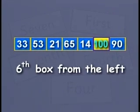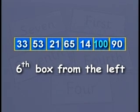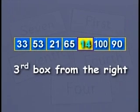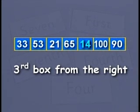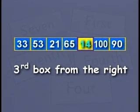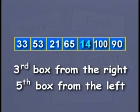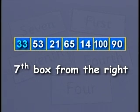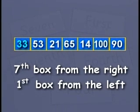From your left, 100 is in the sixth box. From your right, 100 is in box number 1, 2 — the second box from your right. 14 is in the third box from your left. 33 is in the first box from your right.